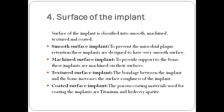The surface of the implant is classified into smooth, machined, textured, and coated. Smooth surface implants are designed to prevent microbial plaque retention. Machined surface implants provide support to the bone. Textured surface implants increase surface roughness to improve bondage between the implant and bone. Coated surface implants use porous coatings; the materials used for coating are titanium and hydroxyapatite.